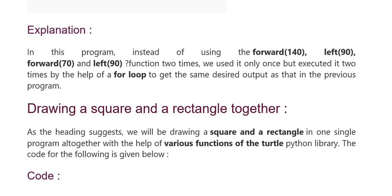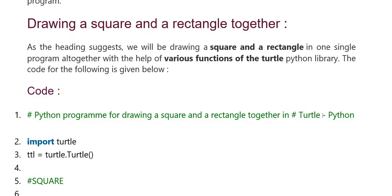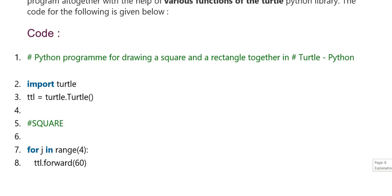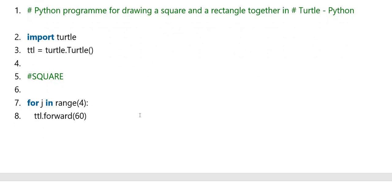Draw square and rectangle together. Here we have suggested drawing a square and rectangle in one single program altogether with the help of various functions of the turtle Python library. Code for drawing together square and rectangle in Python. Turtle Python import turtle, square here forward.